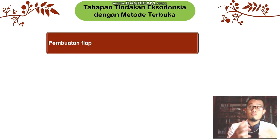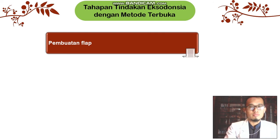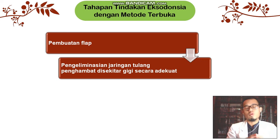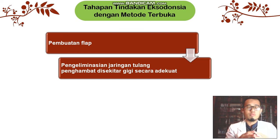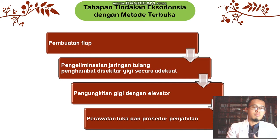Tahapan tindakan eksodonsia dengan metode terbuka: pertama kita melakukan pembuatan flap dengan desain flap yang sesuai dengan kasus, luas, dan regio yang akan dilakukan tindakan. Kemudian eliminasi jaringan tulang penghambat di sekitar gigi secara adekuat menggunakan bur tulang dengan rotary instrument. Selanjutnya kita melakukan pengungkitan gigi dengan elevator. Setelahnya adalah perawatan luka dan prosedur penjahitan.